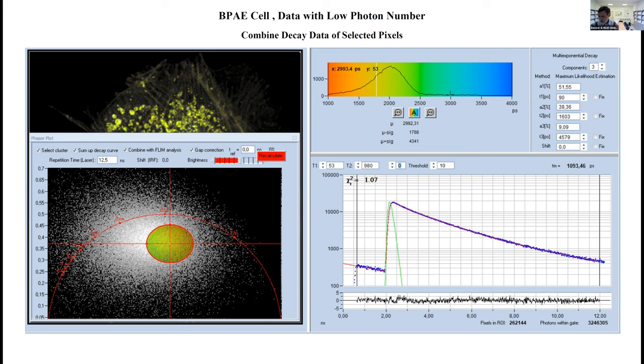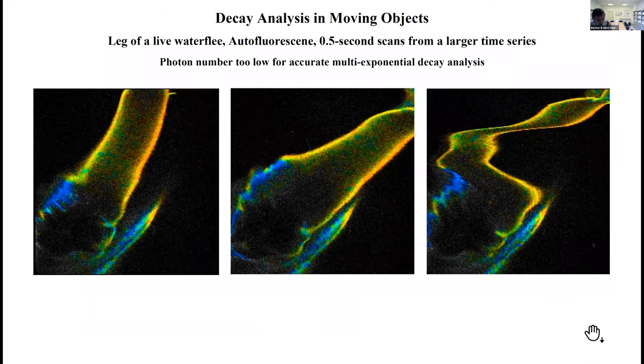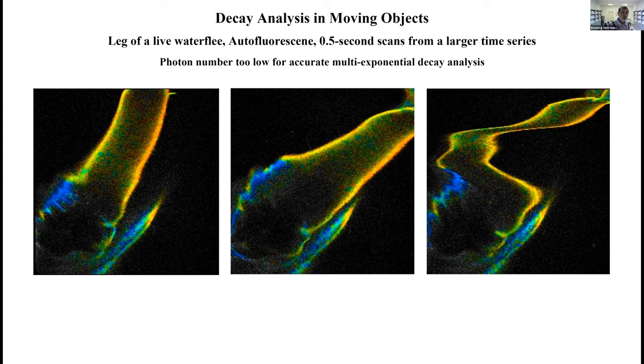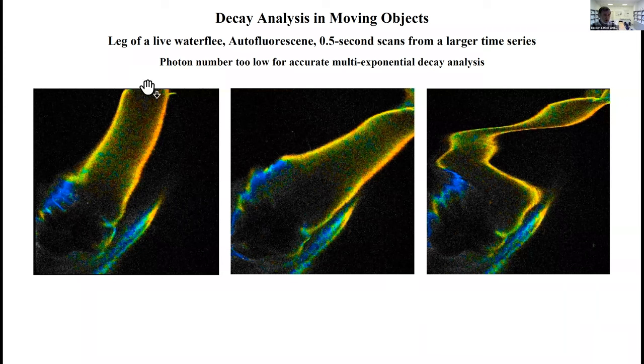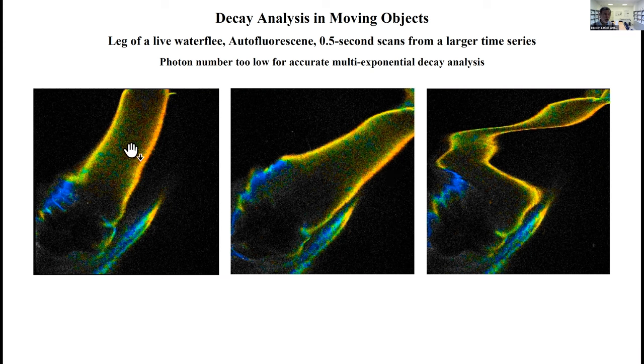What can we use it for as well? A common problem is decay analysis in moving objects. Many people say it's impossible by TCSPC FLIM because the acquisition times are too long. This is an example. This is the leg of a live water flea, and these are 0.5 second scans from a larger time series. You see the leg is moving. Sometimes you get a reasonable image of the leg, sometimes it's totally distorted.